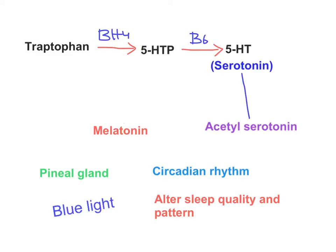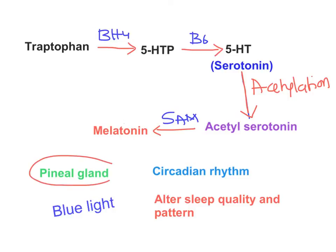In the pineal gland, serotonin is converted to N-acetyl serotonin by an acetylation process. Then N-acetyl serotonin is converted to melatonin by a methylation process, where S-adenosylmethionine (SAM) is used and converted to S-adenosylhomocysteine. So serotonin is converted to melatonin by two processes — acetylation and then methylation — both occurring in the pineal gland.